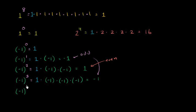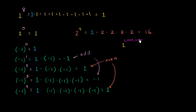Negative 1 to the fourth power — start with 1 and multiply by negative 1 four times: negative 1 times negative 1 times negative 1 times negative 1 — equals positive 1. So 1 to the 1 millionth power is just 1. Negative 1 to the 1 millionth power is also positive 1, since 1 million is even. But negative 1 to the 999,999th power equals negative 1, since 999,999 is odd.